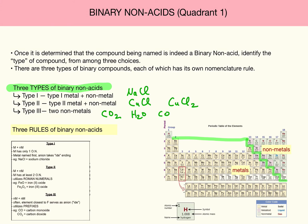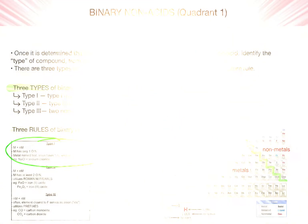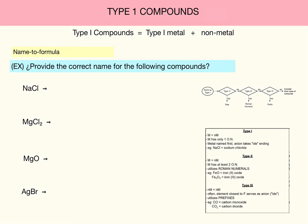As stated earlier, the epicenter of nomenclature is quadrant 1 type 1 compounds, binary non-acids. So let's look at the rules for naming type 1 compounds, recalling that a type 1 compound is a type 1 metal plus a non-metal.